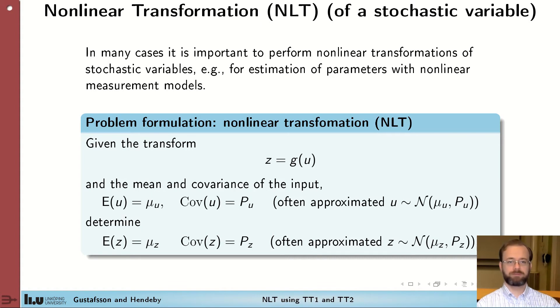The problem is formulated as finding the stochastic properties of stochastic variable z, where z is a function g of another stochastic variable u. We assume that the mean and covariance mu_u and P_u of u are known. And we are interested in finding the mean and the covariance mu_z and P_z of z.